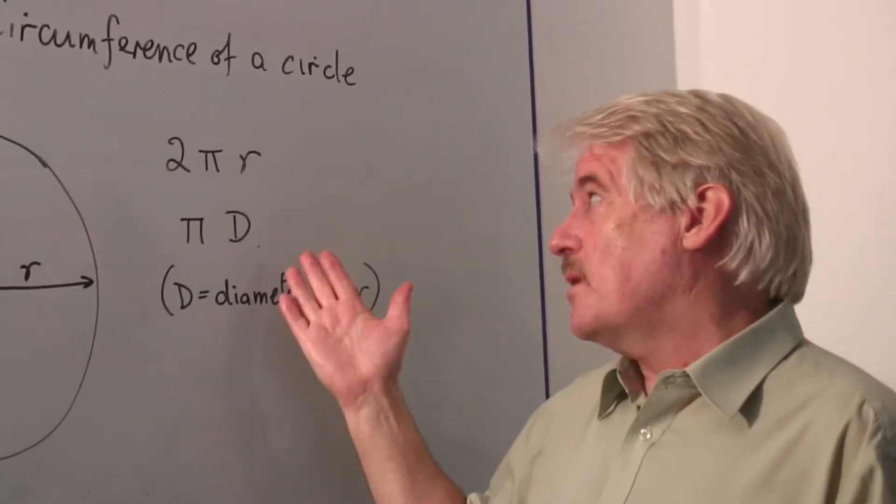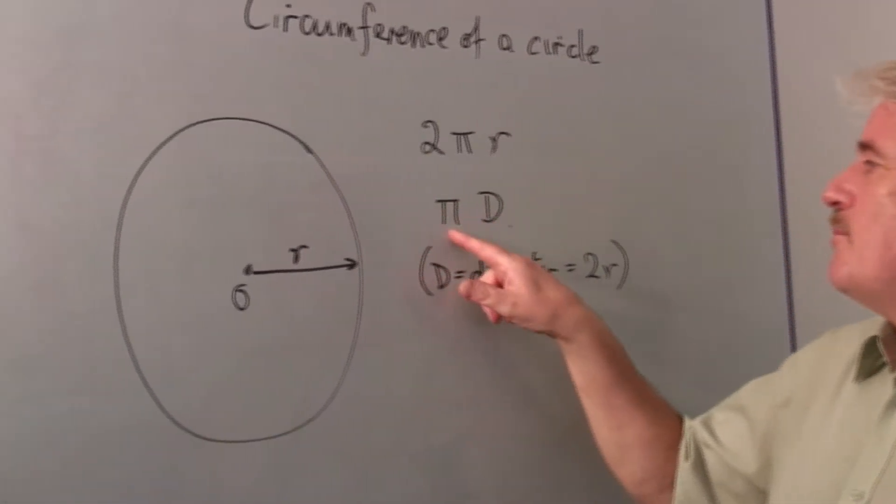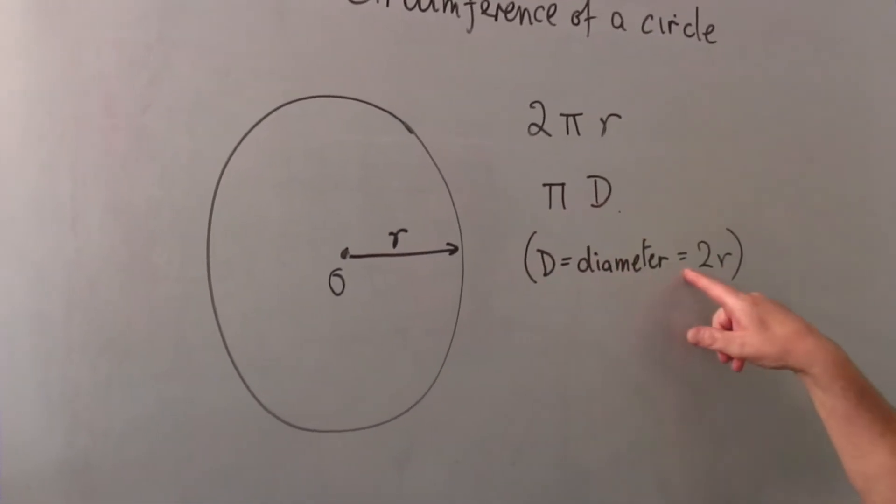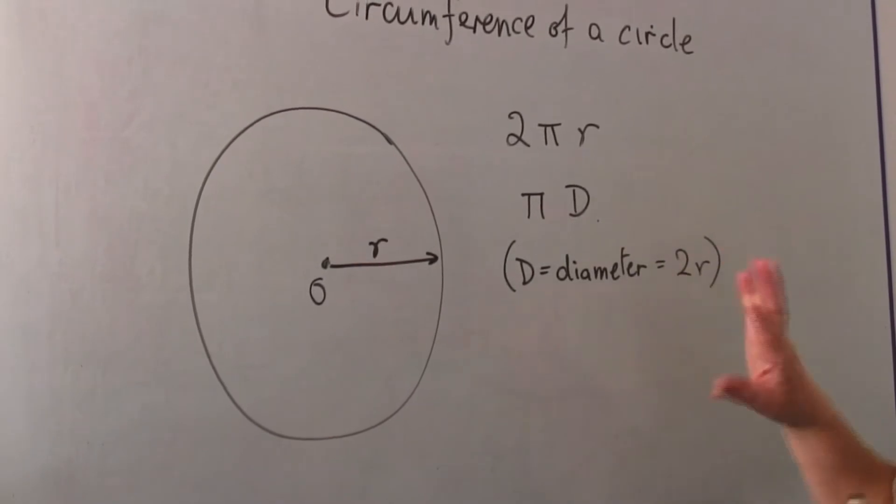So some people use a different formula, pi times D, where D is the diameter, that's two R. It's exactly the same.